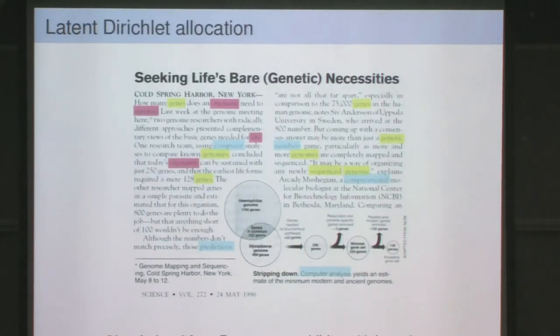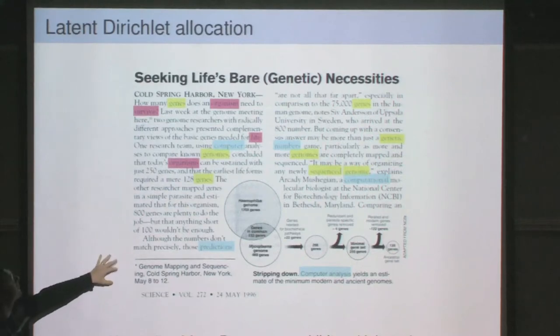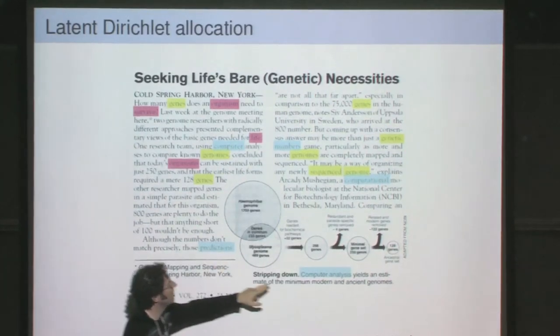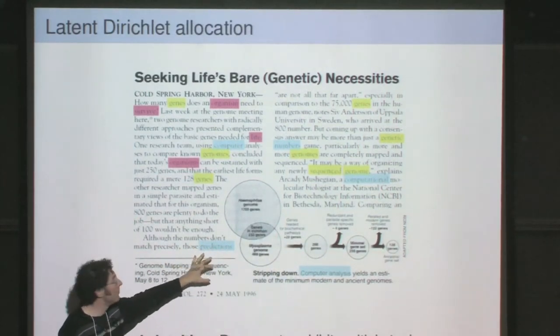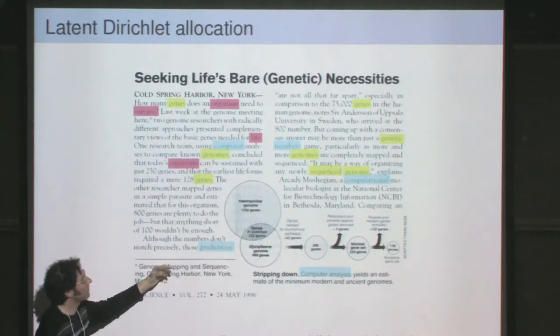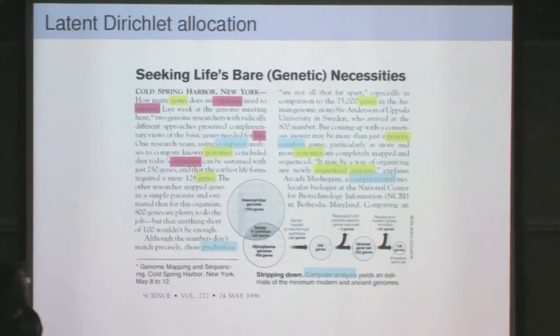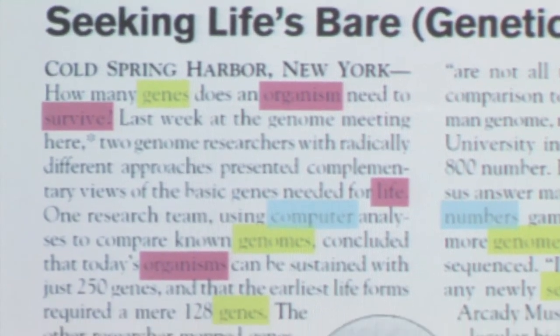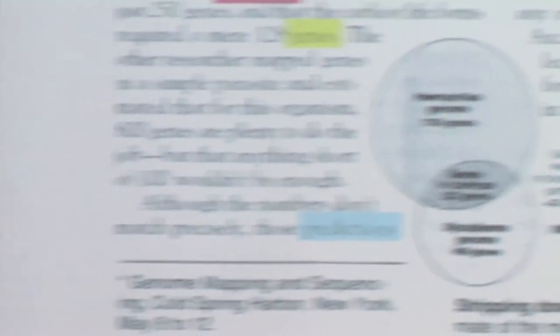The basic idea behind the simplest topic model, latent Dirichlet allocation, is that documents exhibit multiple topics. Here's an article called 'Seeking Life's Bare Genetic Necessities' from Science. Words like predictions, analysis, and computational are highlighted in blue for data analysis. Words like genes, genomes, and sequenced are highlighted in yellow for genetics. Words like organisms, life, and survive, about evolutionary biology, are highlighted in pink. If you squinted, you'd see this article combines the themes of genetics, data analysis, and evolutionary biology—every document exhibits multiple topics with different proportions.